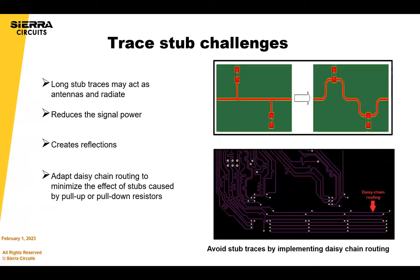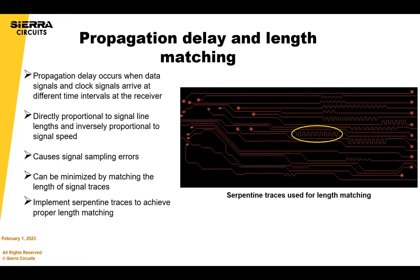Also consider trace stubs. Long trace stubs may act as antennas and radiate, creating reflections and increasing problems in complying with EMC standards. Adapt daisy chain routing to minimize the effect of pull-up or pull-down resistors. In your PCB design, if you have a keep-out area, make sure you put that on your fabrication drawing so the fabricator doesn't add their logo and copper in that area. For propagation delay and length matching: if data signals and clock signals do not match, they arrive at different times at the receiver, causing signal skews. Excessive skew can cause signal sampling errors. Implement serpentine traces to achieve proper length matching.